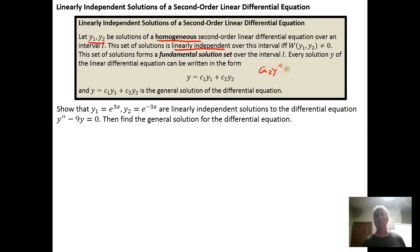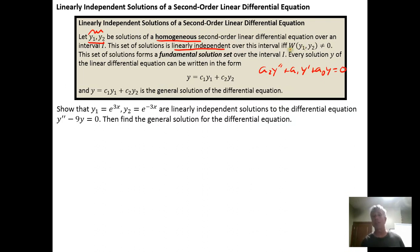The equation looks like: a₂y'' + a₁y' + a₀y = 0. If we have two linearly independent solutions for this differential equation, we can test to see if they're linearly independent by computing the Wronskian. If the Wronskian for those two solutions is not zero, we know that we have a linearly independent set.